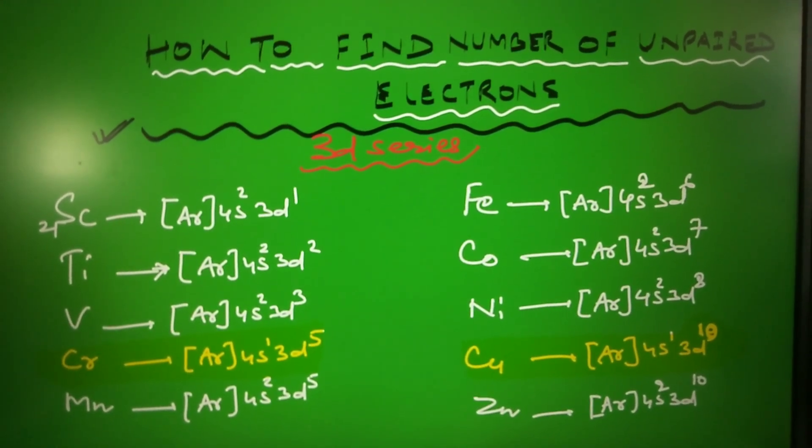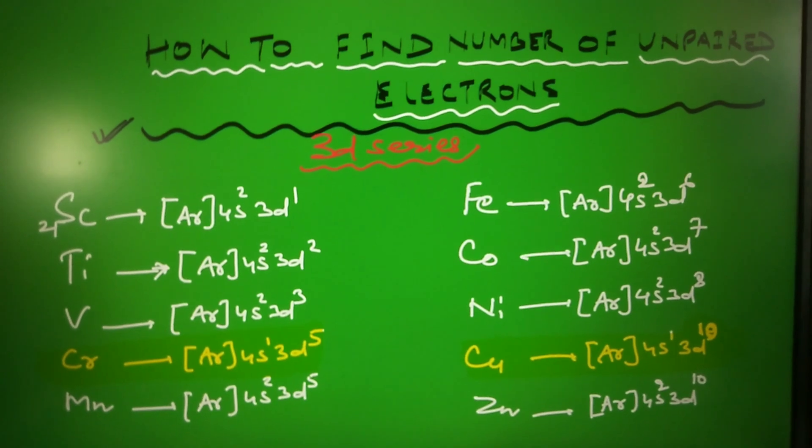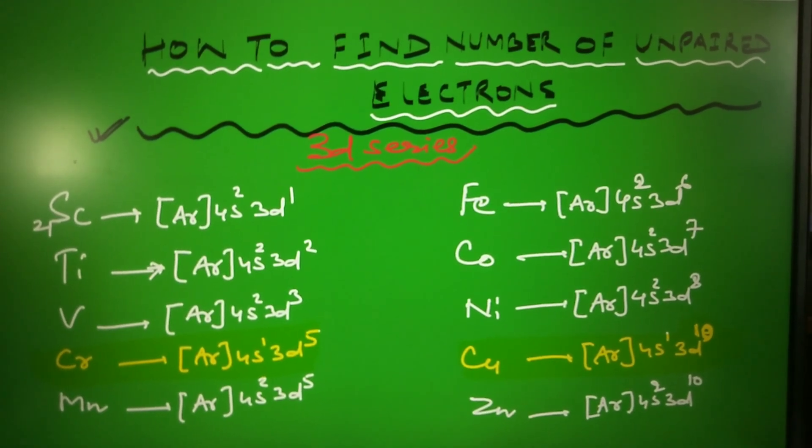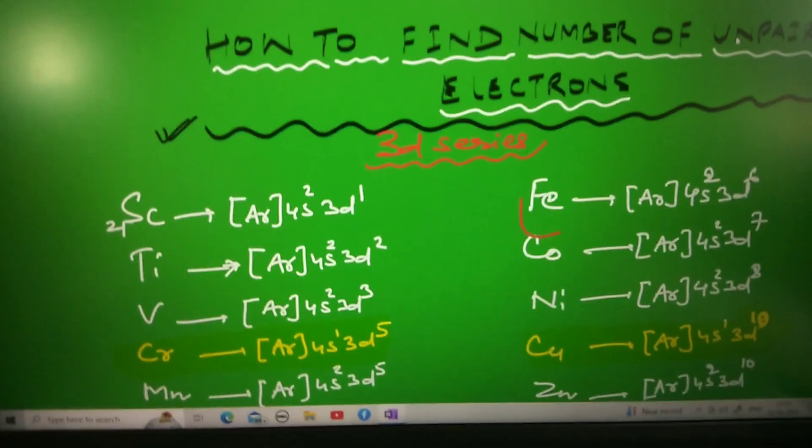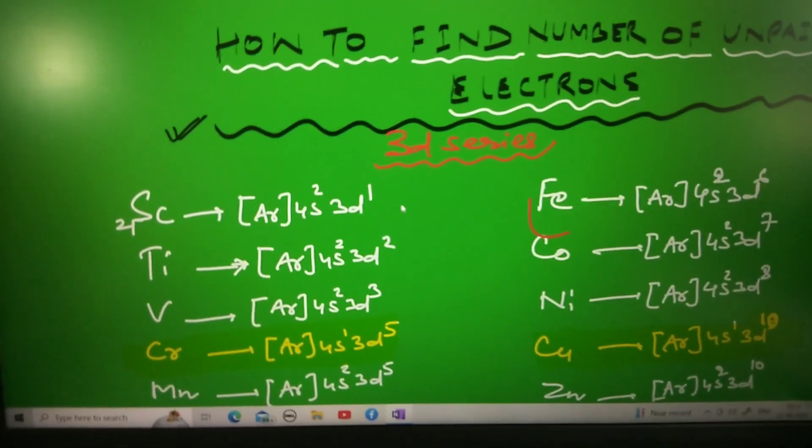Generally they ask questions based on the 3D series: scandium, titanium, vanadium, chromium, manganese, iron, cobalt, nickel, copper, zinc. So let's see the first example.